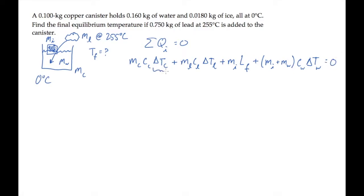The temperature changes are listed here. For the copper, final temperature minus initial temperature. For the lead, final minus the lead's initial temperature, where T sub L is 255 degrees Celsius. And for the water, final minus the initial temperature of zero Celsius.